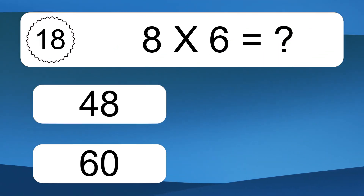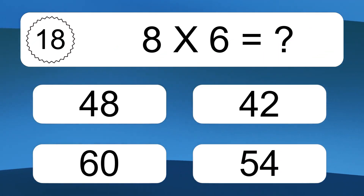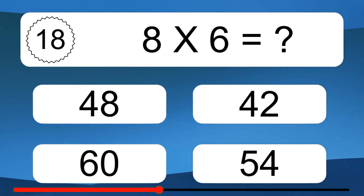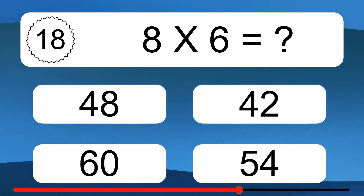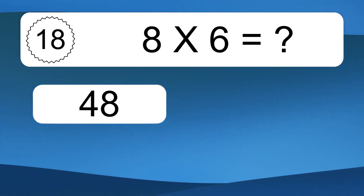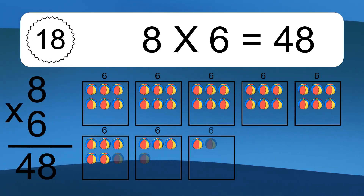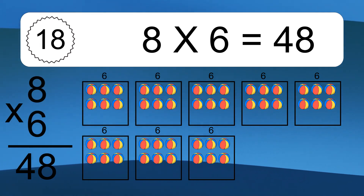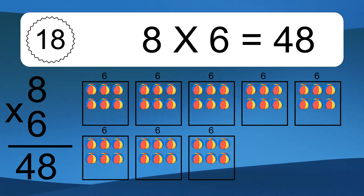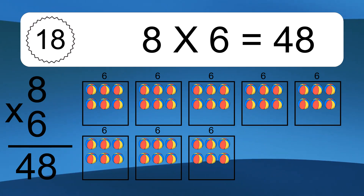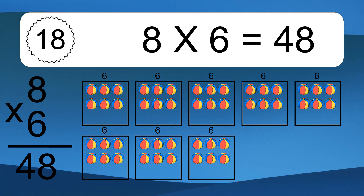8 times 6 equals what? We have 8 boxes, and each box has 6 colorful balls inside. If you count all the balls in all the boxes together, you will have 8 times 6 balls. This equals 48 balls.